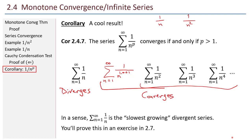That finishes this section. We've seen the monotone convergence theorem, discussed what it means for a series to converge using the sequence of partial sums, and explored the Cauchy condensation test.